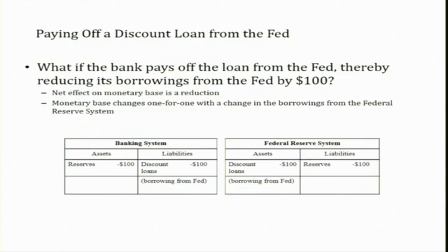What if the commercial bank repays the discount loan? If the bank pays off the loan from the FED, reducing its borrowing by $100, the net effect is that the monetary base is reduced. The FED's reserves decline and its assets also decline. Similarly, the banking system's reserves decline and its liabilities also decline. So the monetary base decreases — similar to how open market operations work but in reverse.